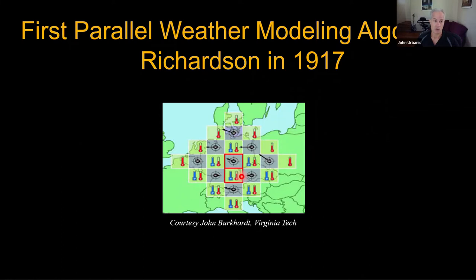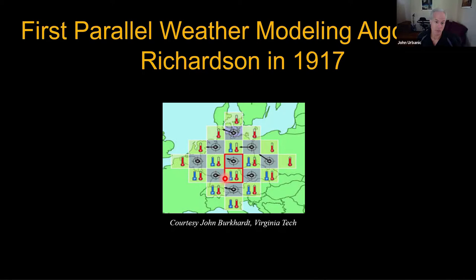So all 64,000 meteorologists do that, communicate with nearest neighbors, and we've all got a valid prediction 10 minutes into the future. Then we all do the exact same thing again and advance further. Weather from far away will eventually impact me — it propagates across the map one grid point at a time, just as it would in reality. So I never need to know more than my immediate neighborhood. This nearest-neighbor grid-based scheme was invented by Richardson with pencil, paper, and mechanical calculators — naive now, but the technique remains.